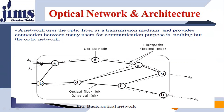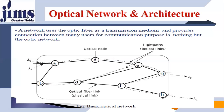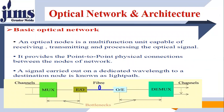Each node operates on different wavelengths, say L1, L2, and so on. In a basic Optical Network, nodes are one of the basic elements. An Optical Node is a multi-function unit capable of receiving, transmitting, and processing Optical Signals. These Optical Networks provide point-to-point physical connections between nodes. Different nodes are connected to each other by Optical Fiber.